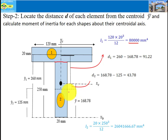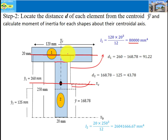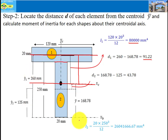The question asks for the moment of inertia about xc. Applying the parallel axis theorem, if I know the moment of inertia about the centroidal axis of shape one, and the distance d1 between that axis and xc, then d1 equals 260 minus 168.78, which is 91.22 mm. By squaring this distance and multiplying by the area, then adding the centroidal moment of inertia of shape one, I get the moment of inertia of shape one about xc.